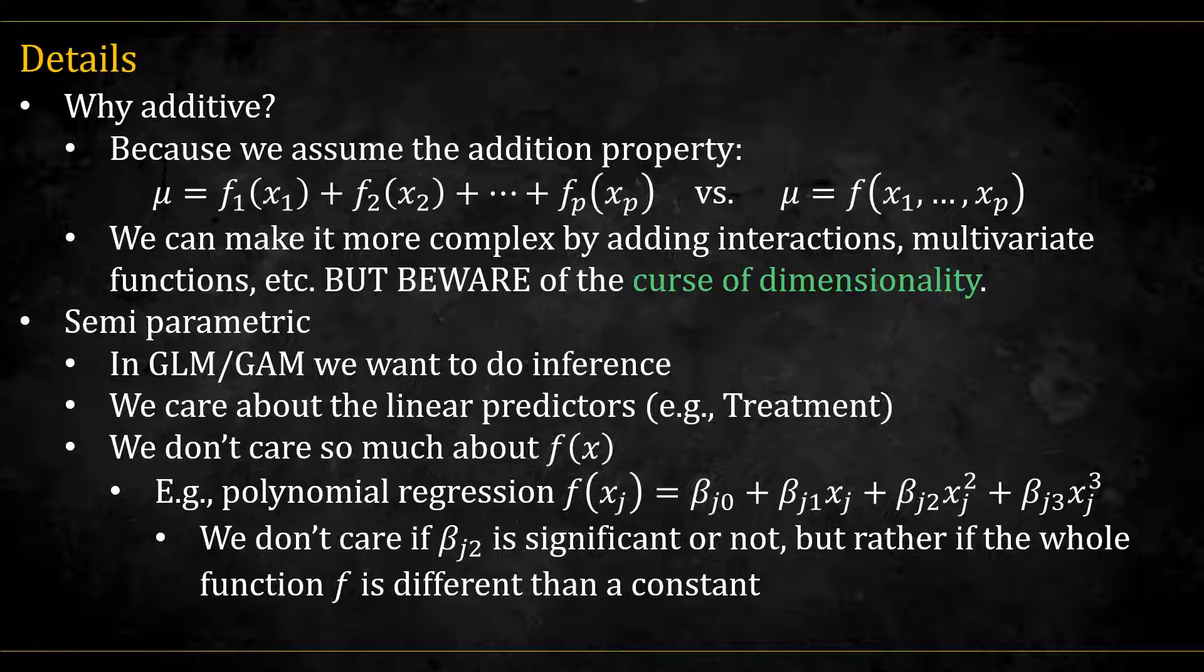Specifically, if f of x is a third degree polynomial, we usually don't care if the squared x coefficient is significant or not, just if the whole function is different than a constant and significantly reduces the metric we are measuring, be it RSS or deviance.